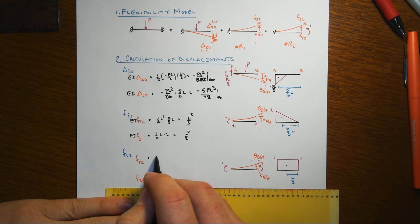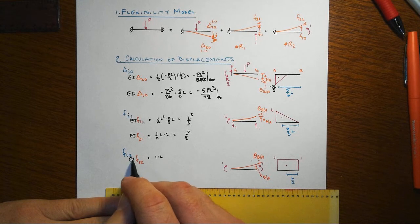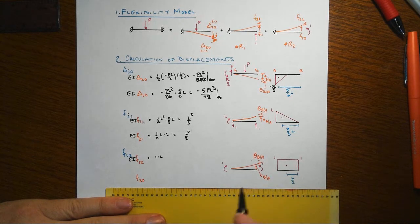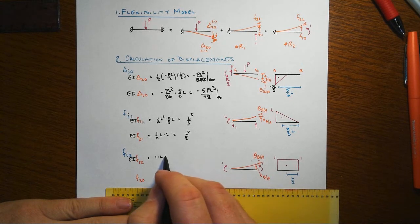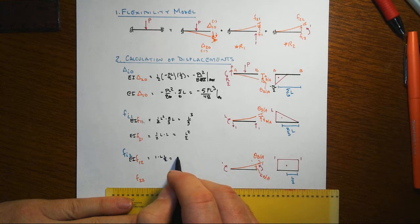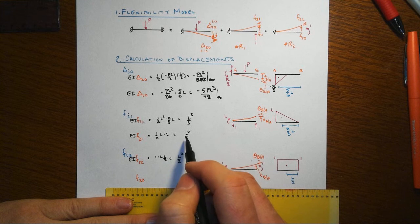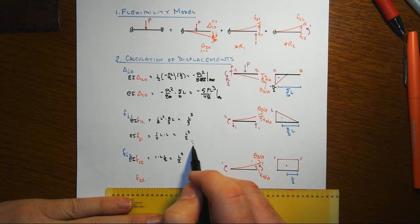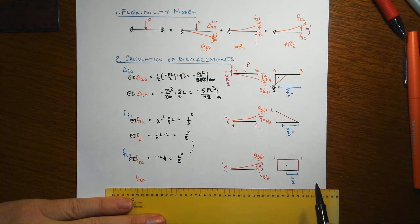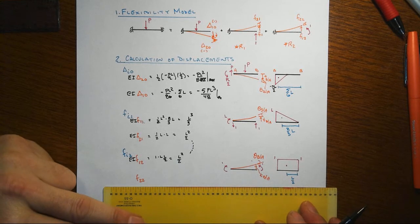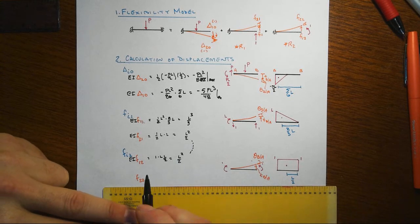So that's just going to be 1 times L. And then we've got the moment arm of L over 2, and we get L squared over 2 positive. And note that that's the same as F21 by Maxwell Beatty Law of Reciprocal Displacements, those should be that way.